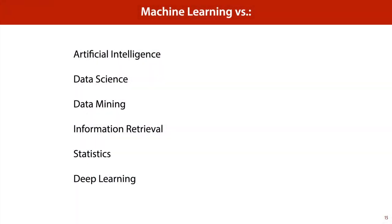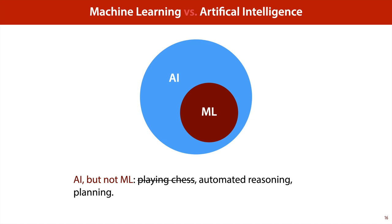Now that we have some idea of what machine learning is, let's finish up this video by looking at what it isn't — how does machine learning differ from other closely related fields? First, machine learning and artificial intelligence. These are often confused in the media. Essentially we can think of machine learning as a subset of artificial intelligence. Artificial intelligence is the general business of building intelligent agents, and sometimes that is done using learning algorithms and sometimes it isn't. Some tasks that are AI but not ML are automated reasoning and planning. Playing chess used to be an example, because Deep Blue used no machine learning whatsoever — however, at the moment the best automated chess playing system does use machine learning.